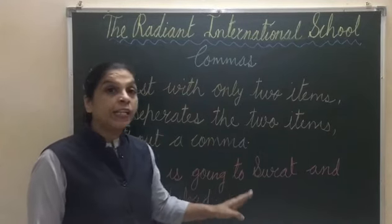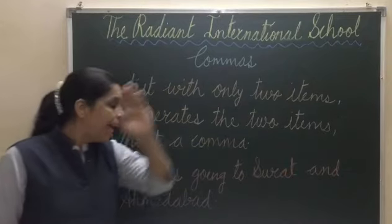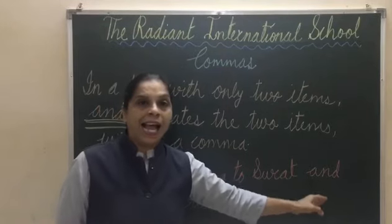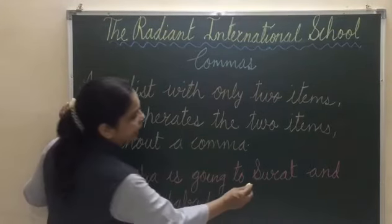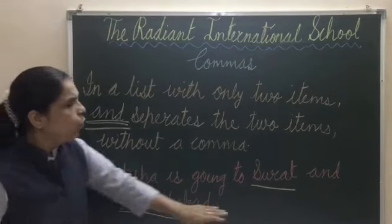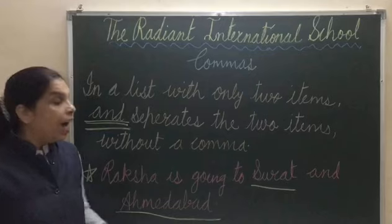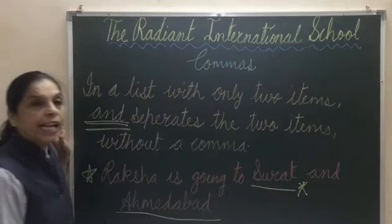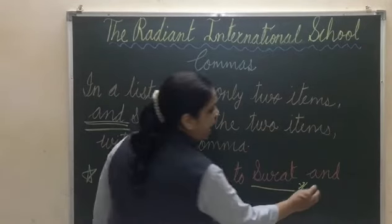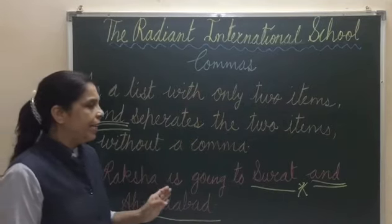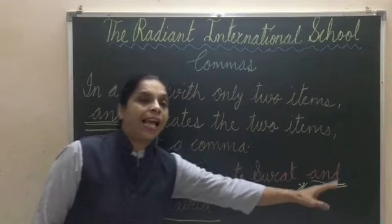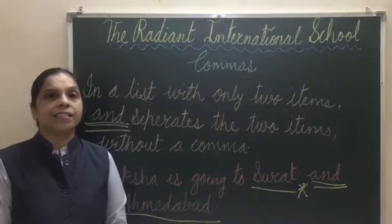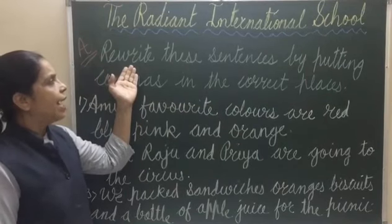For example: Raksha is going to Surat and Ahmedabad. Yahan pe sirf do items hain — Surat and Ahmedabad. Agar two items aayein, toh yahan comma nahi aayegi — 'and' aayega. Raksha is going to Surat and Ahmedabad.